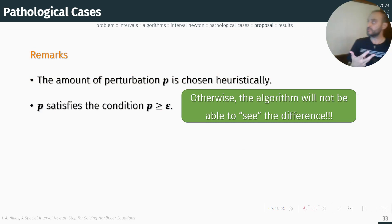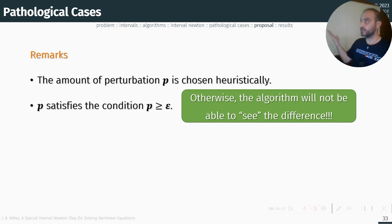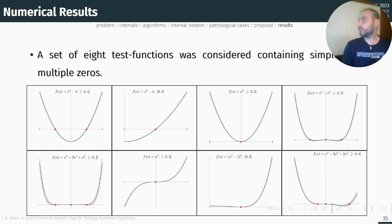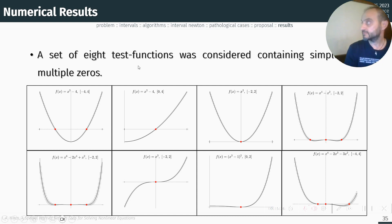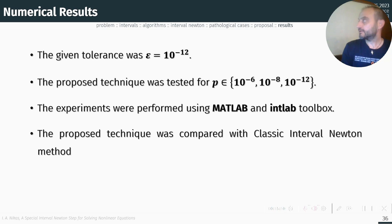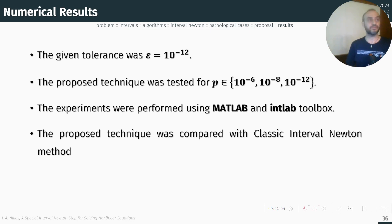Some remarks: the amount of perturbation p is chosen heuristically, but p must be greater than epsilon — otherwise the algorithm will not be able to see the difference — and less than epsilon as well to satisfy the condition. We consider some test functions where if no multiple zero exists, the behavior is the same. We apply the interval Newton with tolerance 10⁻¹², test our technique with various p values, and use MATLAB with the INTLAB toolbox to implement our approach, comparing against classical interval Newton.